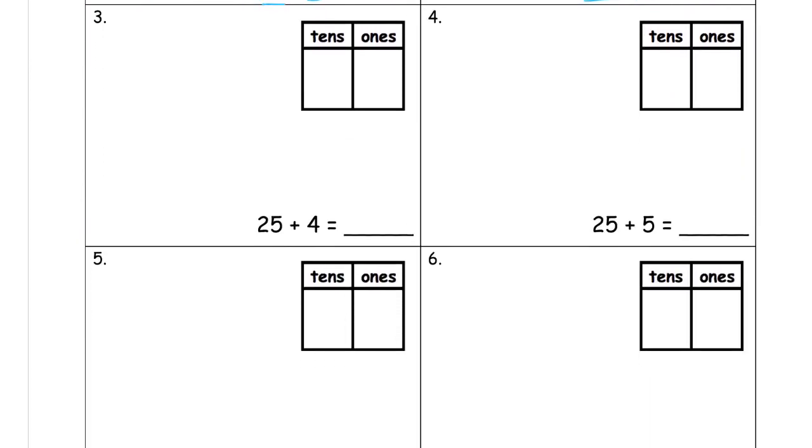Here we are, 25 plus 4. So we need 10, 10, 20. One, two, three, four, five. And then we need four more: six, seven, eight, nine. So that's two tens and nine ones. 25 plus 4 equals 29. Very similar to the one before it.